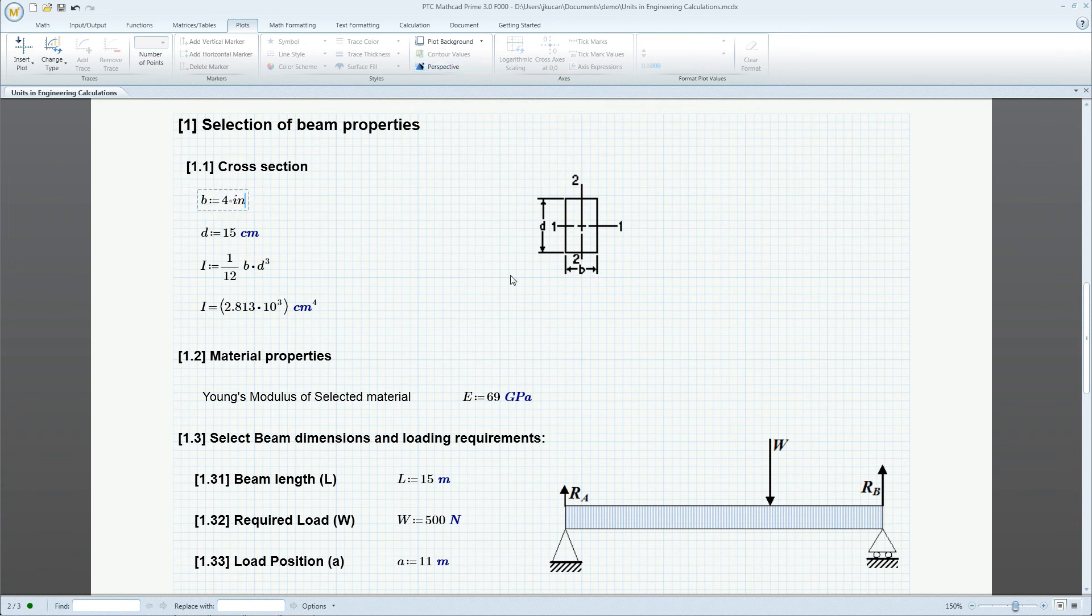Instead of centimeters, let's define the cross-section in inches. The moment of inertia is still in centimeters to the fourth power, but we can change it to inches.